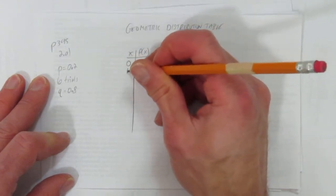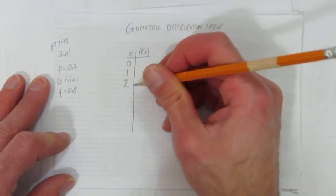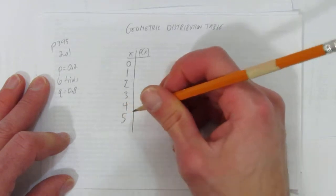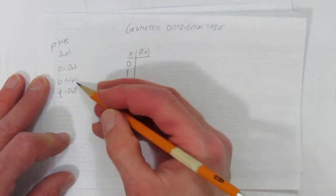Or 1 failure, then you'd have your success. Or 2 failures, then success. 3, 4, 5, but we don't actually go up to 6 because we only have 6 trials.